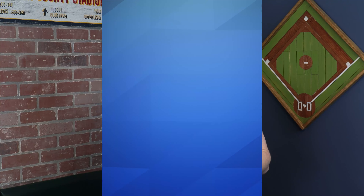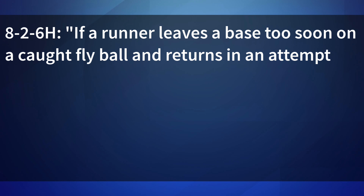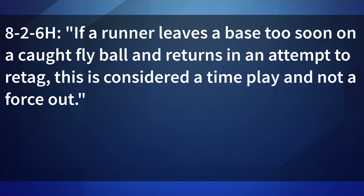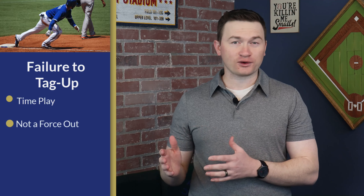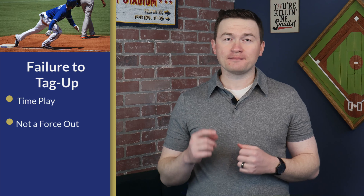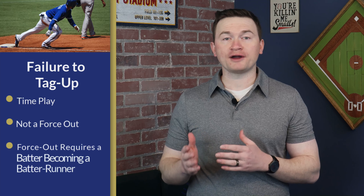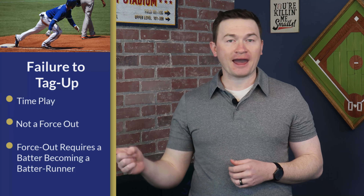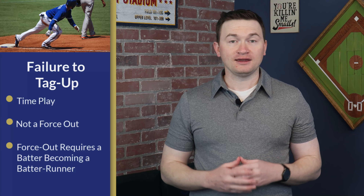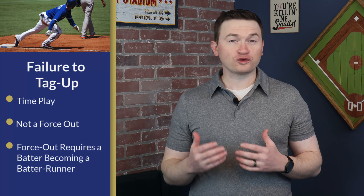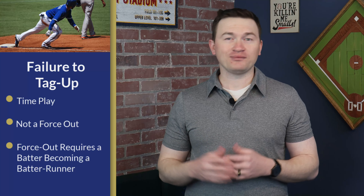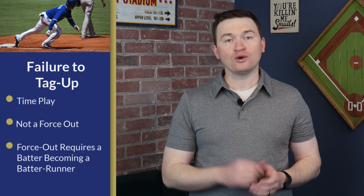Moving forward on tag-ups, let's dig into 8-2-6-H under appeals. If a runner leaves a base too soon on a caught fly ball and returns in an attempt to re-tag, this is considered a time play and not a force-out. The importance here is that if an out for not tagging up is the third out of an inning, it is a time play and not a force-out. A force-out is created when a runner loses their right to a base because of a batter becoming a runner. In this play, the ball has to have been caught, which would remove any force-play, so any runs that scored before the appeal is made will count.